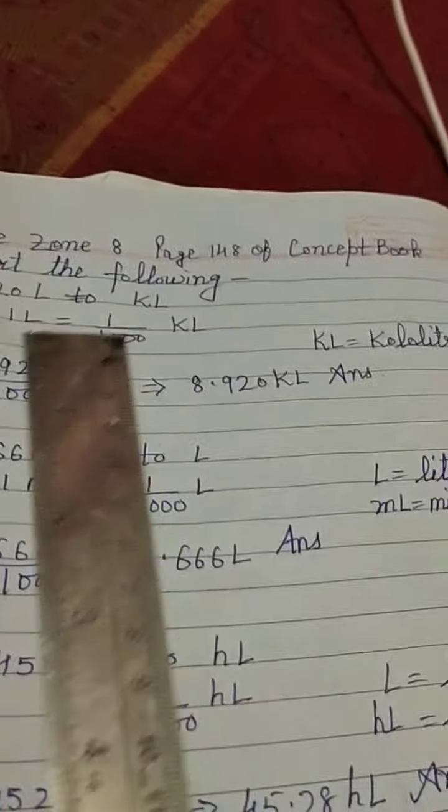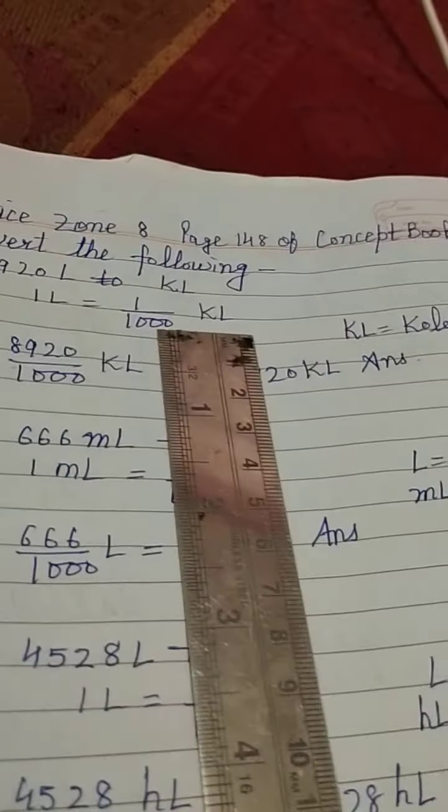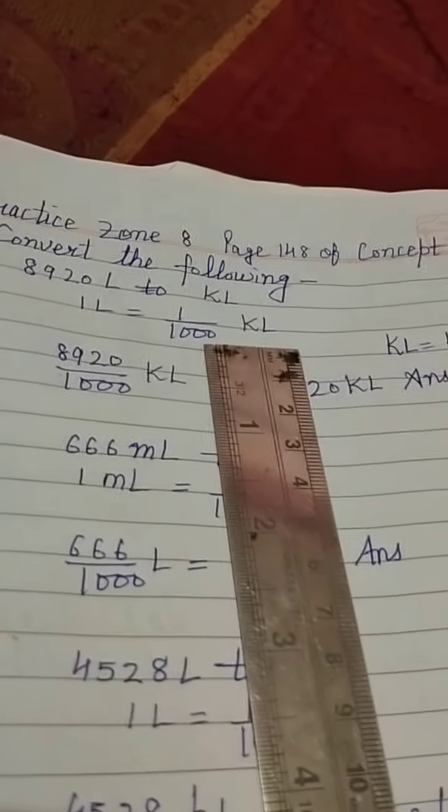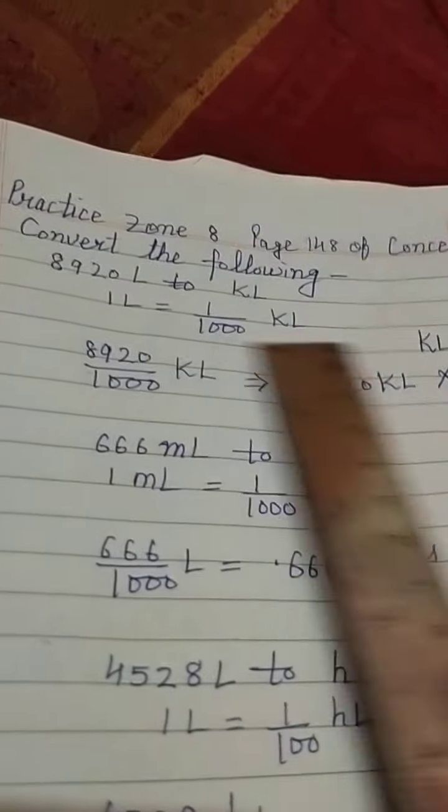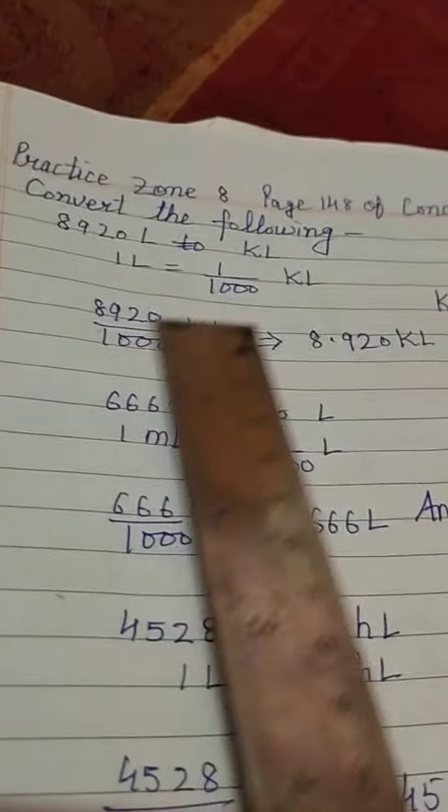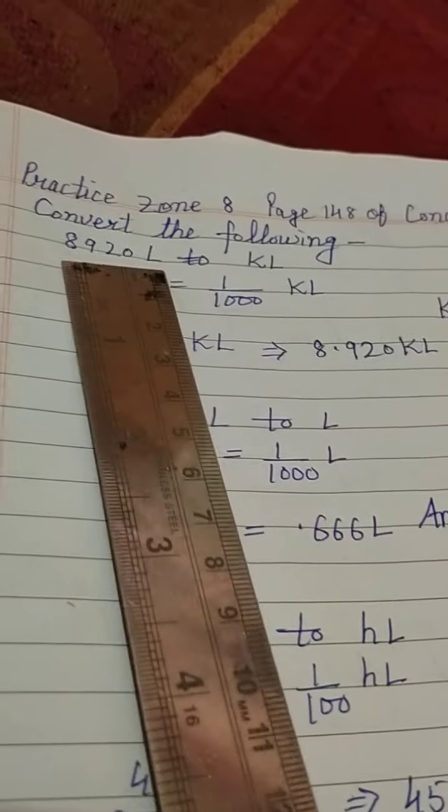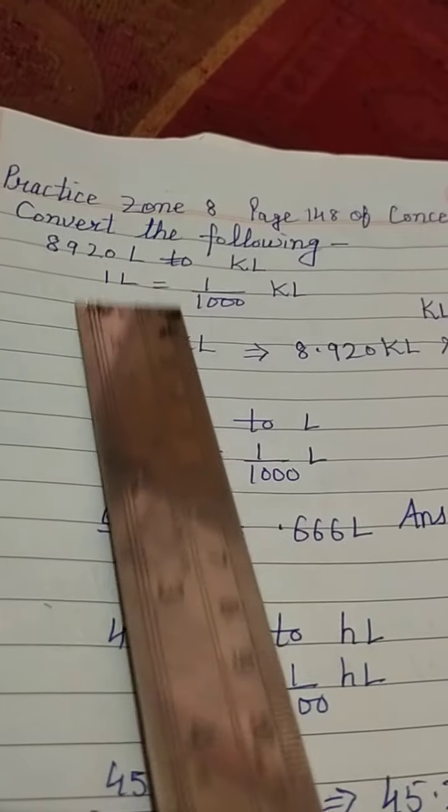So 1 litre is equal to 1 by 1000 kilolitre. KL means kilolitre. So we are having this question: 8920 litre.